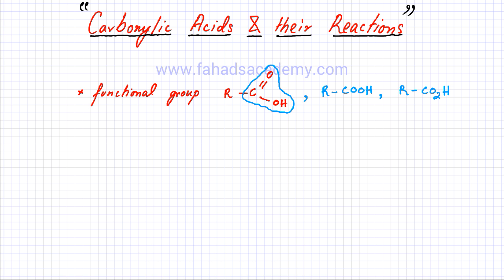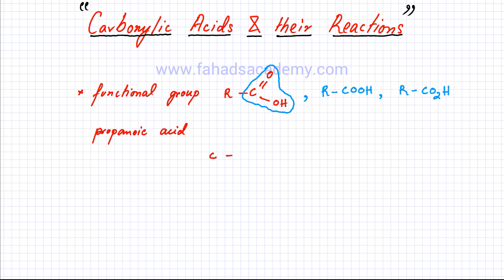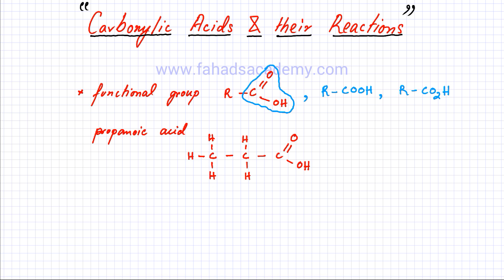Let's think of a carboxylic acid — propanoic acid. 'Prop' means there are going to be three carbon atoms, so I'll draw one, two, and three carbon atoms with a carboxylic acid functional group, then complete the rest of the molecule by drawing all the hydrogen atoms to complete all the bonds. This is propanoic acid.